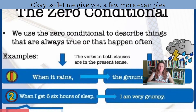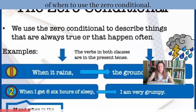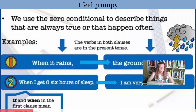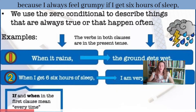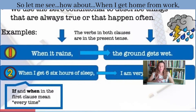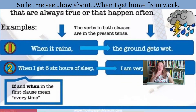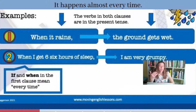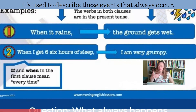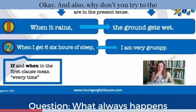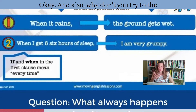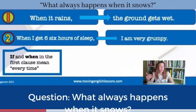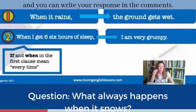Let me give you a few more examples of when to use the zero conditional. If I get six hours of sleep, I feel grumpy — because I always feel grumpy if I get six hours of sleep. Another example: when I get home from work, I eat a healthy snack. It happens almost every time. It's used to describe events that always occur. Why don't you try to form a zero conditional using this prompt: what always happens when it snows? You can write your response in the comments.